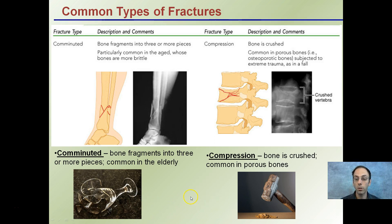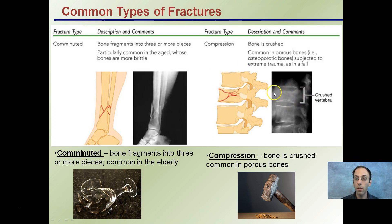Another type is called a compression fracture, where the bone is crushed — like the strong metal weight of a hammer. It's common in bones that are very porous. The vertebrae in our vertebral column are very porous and as a result are subject to being crushed. On the X-ray we can see a vertebra that is definitely crushed or not quite as tall as the one below it. These porous bones are subject to compression-type fractures, which can be very painful.